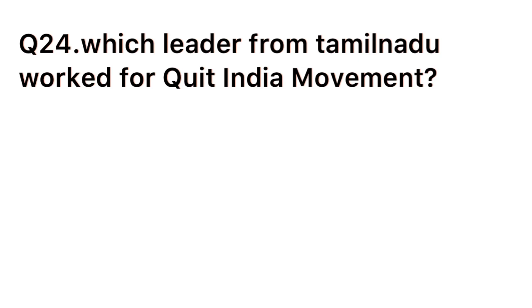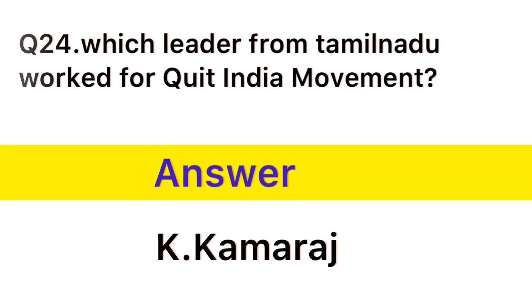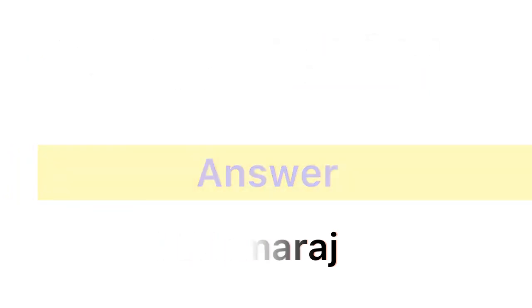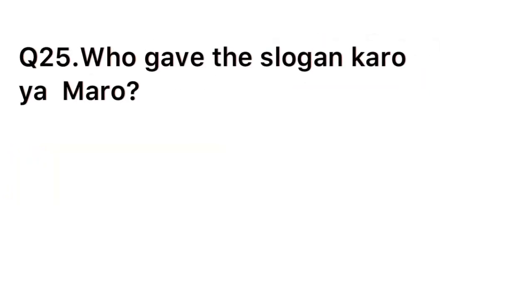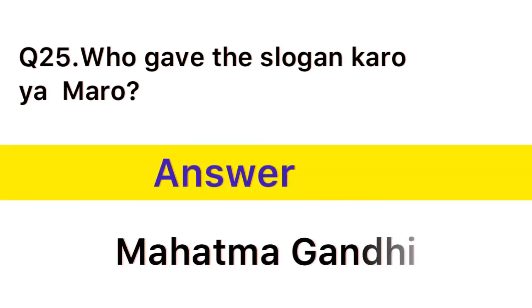Question number 24: Which leader from Tamil Nadu worked for Quit India Movement? Answer: K. Kamaraj. Question number 25: Who gave the slogan Karo ya Maro? Answer: Mahatma Gandhi. Hope this video is very useful for you. If you feel the same, please like and comment and don't forget to subscribe my channel for more videos. Thank you.